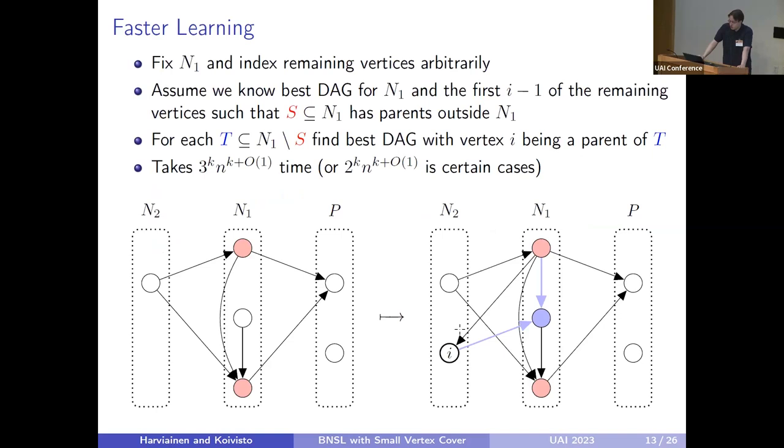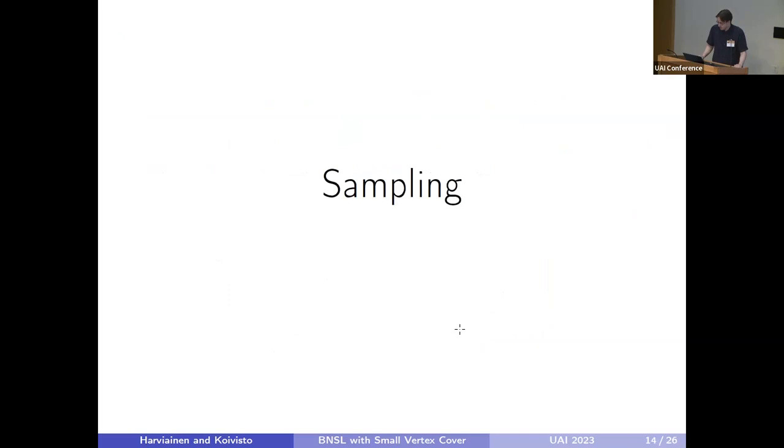The main ideas are to assume that we have already computed this for the specific vertex cover, as well as the first i-1 of the remaining vertices, such that a certain subset of the vertex cover has already parents outside it. When we add the ith vertex, we essentially guess the subset of the vertex cover that the ith vertex should be a parent of. Then update the optimal parent sets for those vertices, as well as pick the optimal parent set for the ith vertex, such that the core remains a DAG. This takes 3 to the power of k times n to the power of k plus something polynomial in N. That's its time complexity.